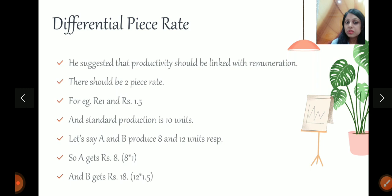So that means, person B is working more efficiently. So Taylor said, the person who works more efficiently, reward them more. So he said, whoever produces above ten units, will get 1.5 rupees per unit. Whoever produces below ten units, will get 1 rupee per unit.